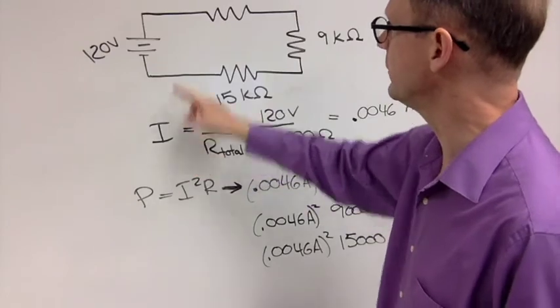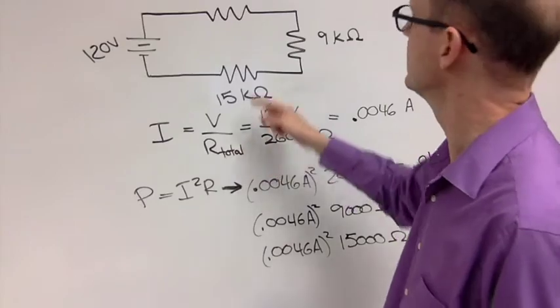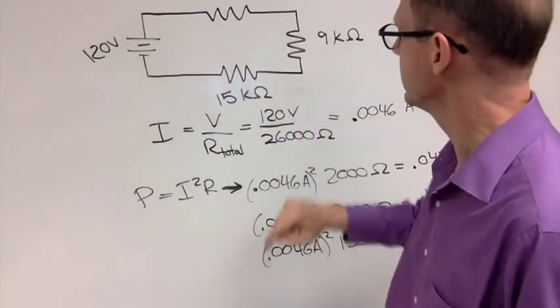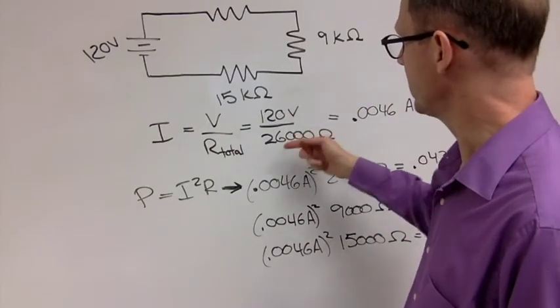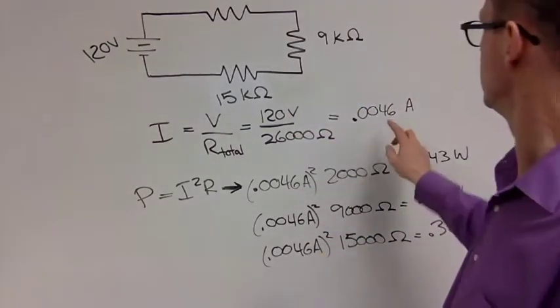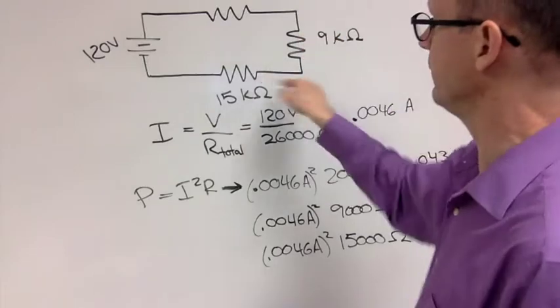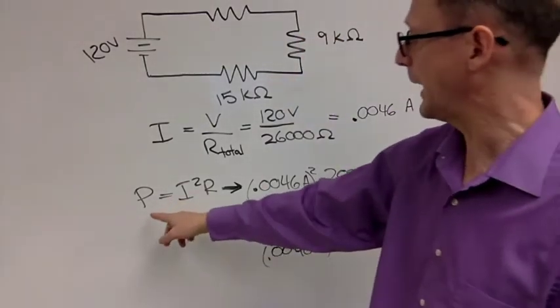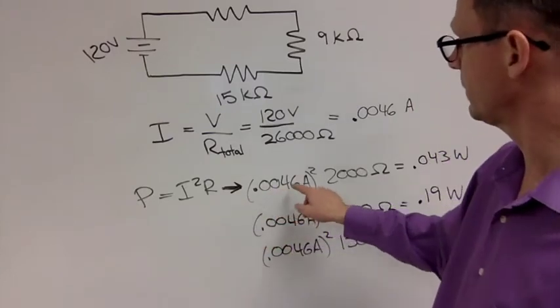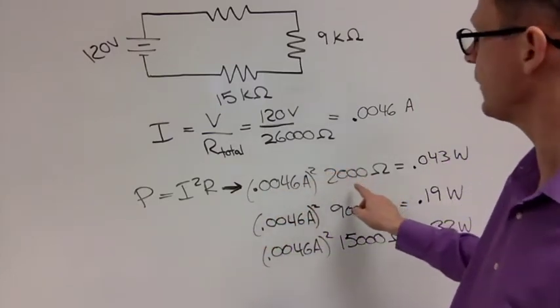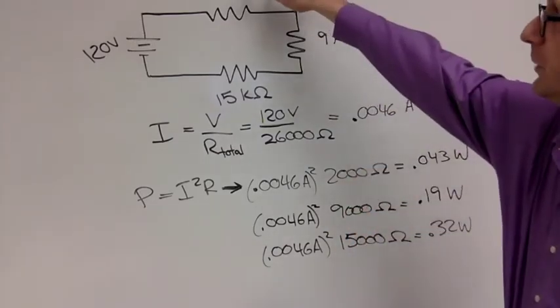In series, what we're going to need to do to find the current through all three of them is find out the total resistance. Just add those up. We've got 2, 9, 15 gives us 26,000 ohms. 120 volts divided by 26,000 ohms gives us 0.0046 as the current flowing through each one of these resistors. And so the power of each resistor is I squared R. So 0.0046 amps squared times 2,000 ohms gives us 0.043 watts for the 2-kilohm resistor.